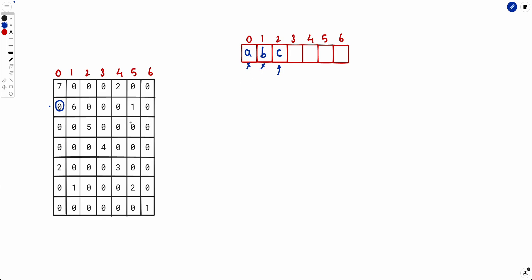Now position 3. LCP(3,0) is 0, so not equal to 'a'. LCP(3,1) is 0, so not equal to 'b'. LCP(3,2) is also 0, so not equal to 'c' either. So we put a new character: 'd'.